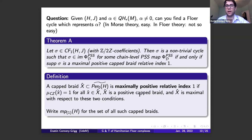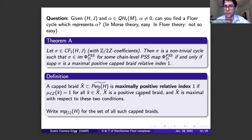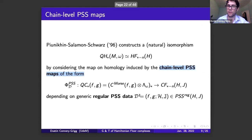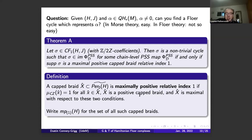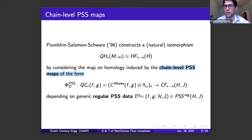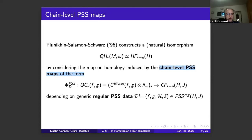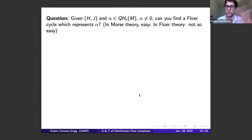The characterization is: a given chain represents the fundamental class if and only if the braid formed by its support forms what's called the maximally positive capped braid of relative index one — a purely topological notion depending only on the qualitative dynamics of your Hamiltonian isotopy. This is an if and only if. To clarify: 'some chain-level PSS map' means there exists a choice of regular data — a Morse-Smale pair and an s-dependent Floer equation — such that the associated PSS map at the chain level maps the fundamental class to that cycle. Here J is an s- and t-dependent almost complex structure interpolating to some autonomous thing at negative infinity.